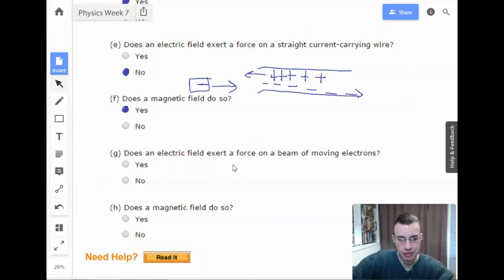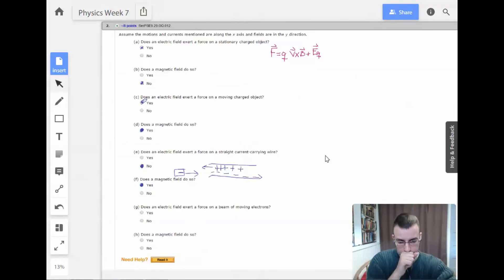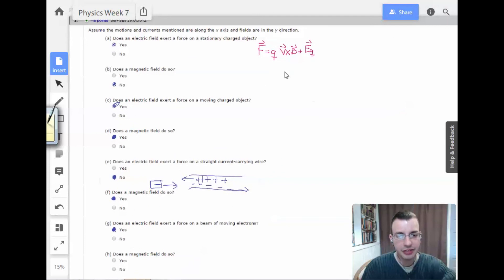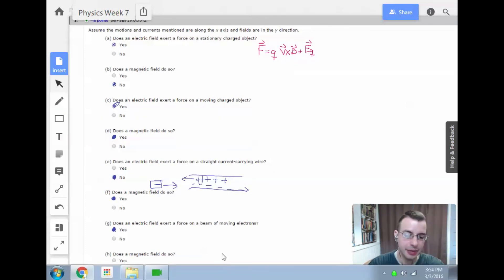All right, so now we get back to the more obvious portions. Does an electric field exert a force on a beam of moving electrons? Yes. Yes, they do. So, before, because there's electrons in a wire, the electric field exerted a force on the straight current carrying wire. It was just compensated by the protons that were also there. So, this time, we don't have the protons and the net force will be positive because we have E times Q. So, this guy is going to be yes. All right. Does a magnetic field do so? Yes. We have force equals QV cross B. Therefore, we're going to have a magnetic field there as well.